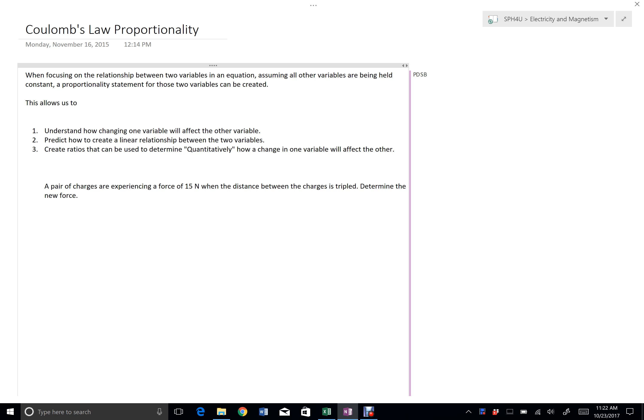So when we have some sort of law, like Coulomb's Law, force, the electric force, is equal to the constant times q1, one charge, two charge, over r squared, and we want to figure out how these variables are affecting this overall result, we can use proportionality to effectively eliminate or effectively ignore the parts of the equation that we're not changing and focus on what changing one variable will do to the overall result.